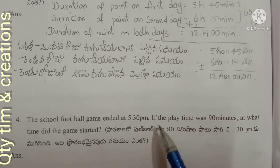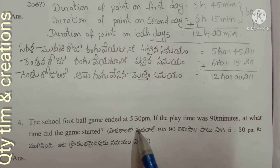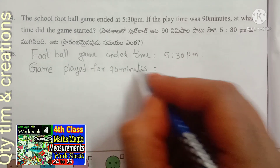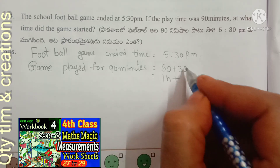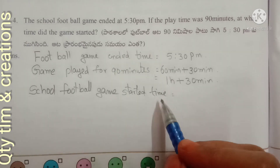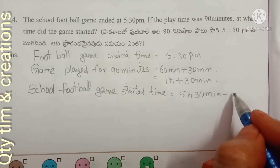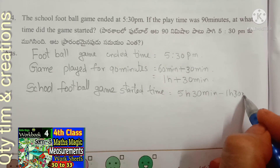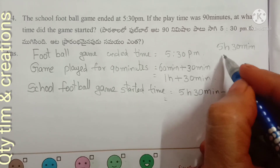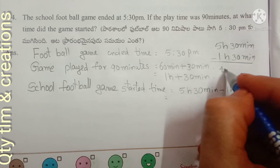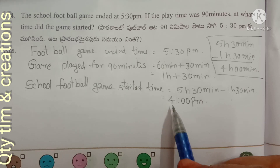Next: The school football game ended at 5:30 PM. If the play time was 90 minutes, at what time did the game start? 90 minutes equals 60 plus 30, which is 1 hour 30 minutes. Game started time equals ended time minus playing time: 5 hours 30 minutes minus 1 hour 30 minutes equals 4 hours. So the football game started at 4 PM.